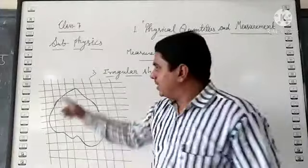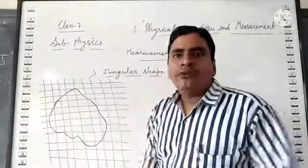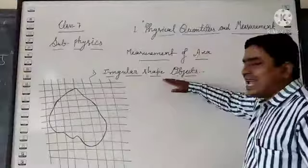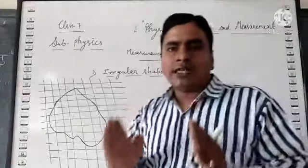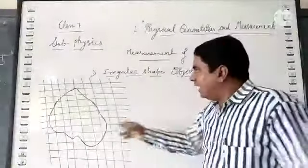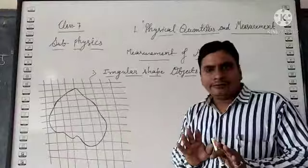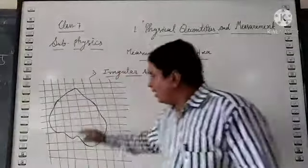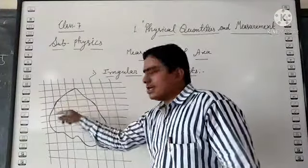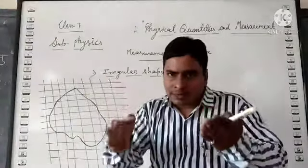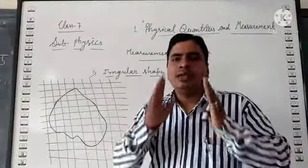This is graph paper in which each square or block has dimensions of one centimeter by one centimeter. When we are going to find the area of an irregular shape object or flat surface, we must use graph paper. First we have to plot the shape of that particular irregular object on the graph paper. Now start counting the complete square blocks because length and breadth of each block is the same.